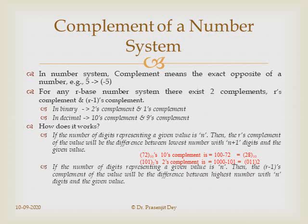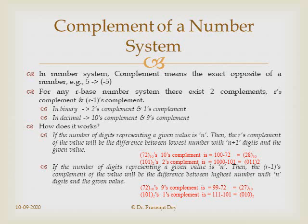If the number of digits is n, the R-1's complement is the difference between the highest n-digit number and the given value. For example, 72 is a 2-digit decimal number; the highest 2-digit decimal number is 99, so 99 − 72 = 27, which is the 9's complement of 72. For binary, 101 is a 3-bit number; the highest 3-bit binary number is 111, and 111 − 101 = 010, which is the 1's complement of 101.